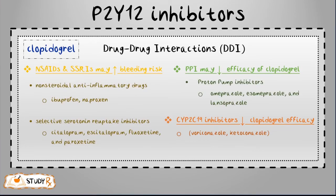Other warnings include drug-to-drug interactions with clopidogrel. Selective serotonin reuptake inhibitors (SSRIs) and NSAIDs are not recommended to be taken together with clopidogrel, as they may increase the bleeding risk. NSAIDs include over-the-counter medications such as ibuprofen and naproxen.